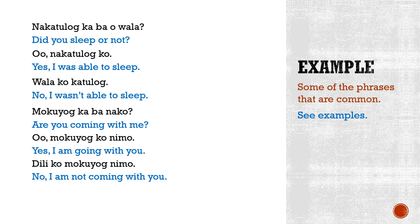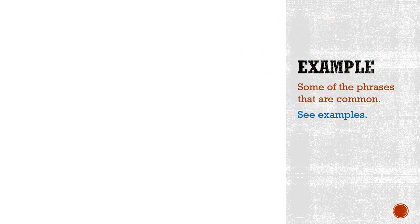By now, I assume that you have already seen the pattern. It's pretty basic: oo or dili. Even if it's not emphasized in the question that you have an option to say no, it is understood that that is part of the original question. We just want to make sure that oo or dili really sticks in our memory.